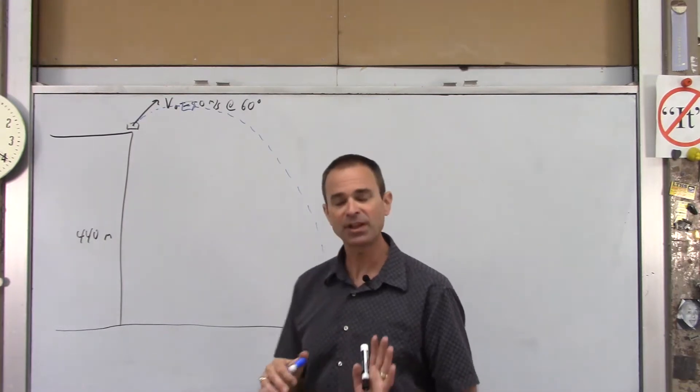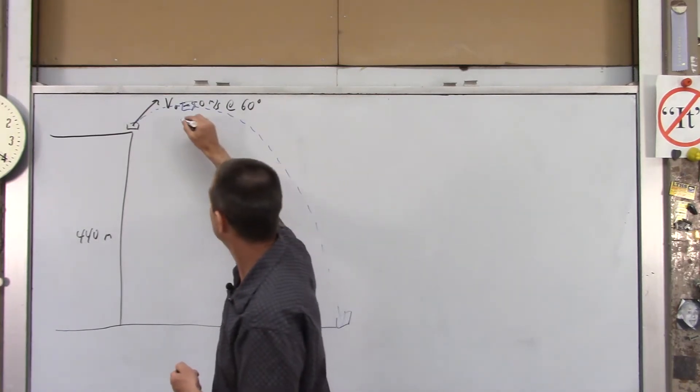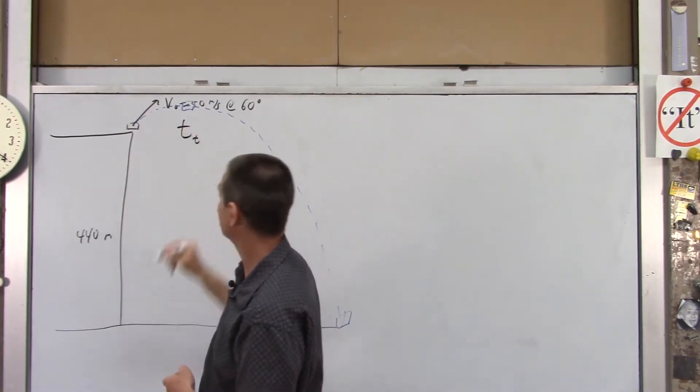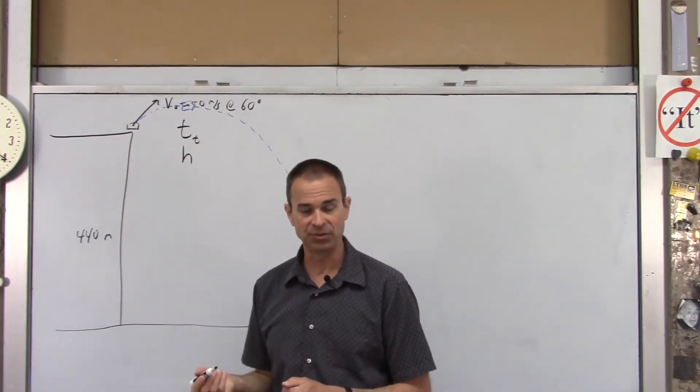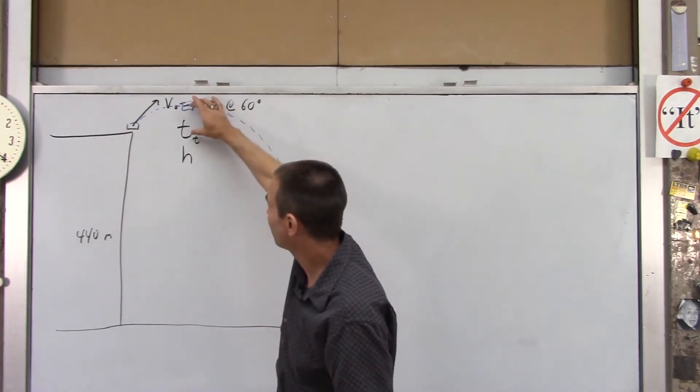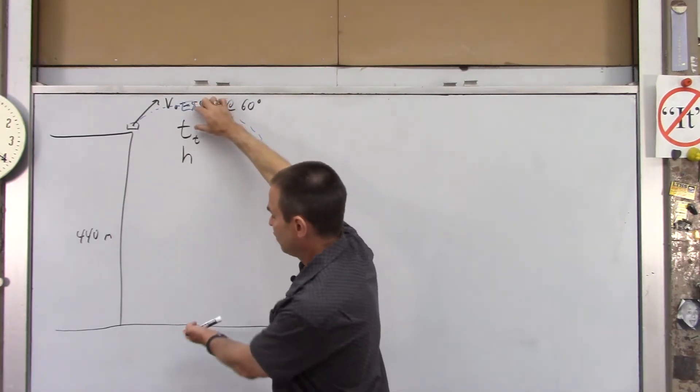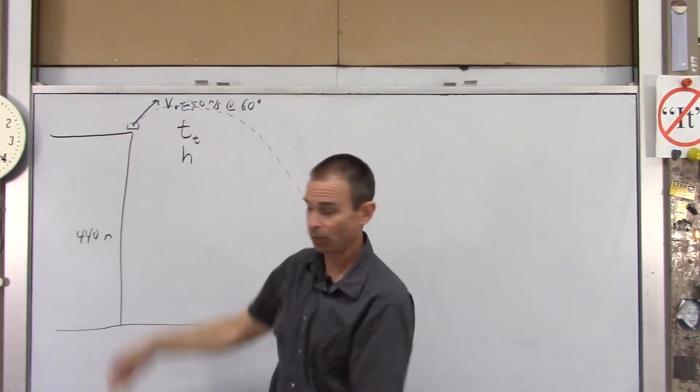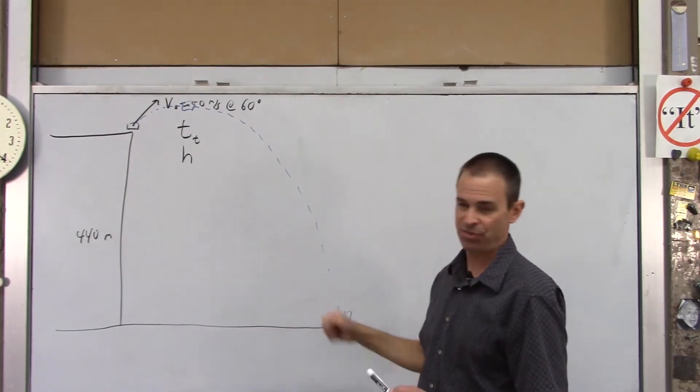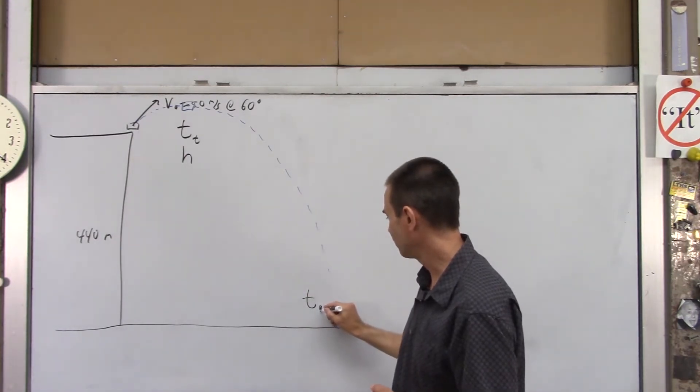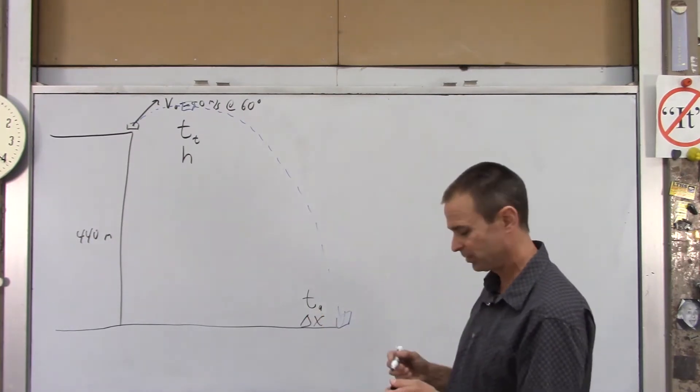It's basically you're doing two separate problems when you do that. So at the top of the path, we're going to find the time to the top, t sub t. And we're going to find the max height that the book achieves. And what height we're going to find is how high above the launch point it gets. Obviously, if you knew that number and you want to know how high off the ground it gets, you would just add the 440 to that number. For the entire path, I want to know the time in the air, t sub a. And I also want to know delta x. Where does it land? How far away does it land?